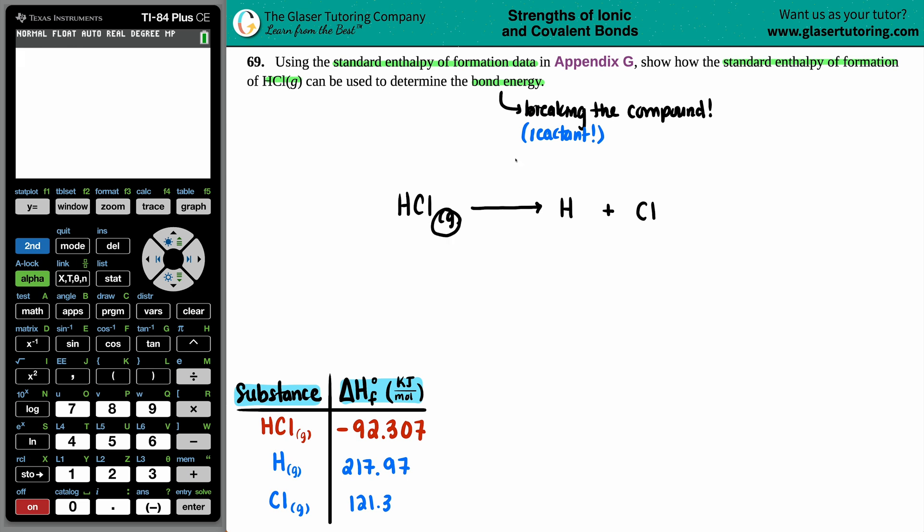So with that being the case, it can only just be H, and it could only just be Cl. And when you're doing your bond energies, just know that it's gases all around. So we've got gas for HCl, this H would be a gas, and so will the Cl. So now this is where we have to go to that Appendix G to find out the delta H values, the standard enthalpy of formation, for these components.